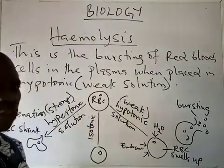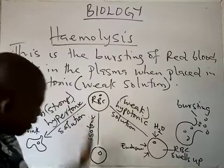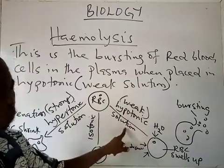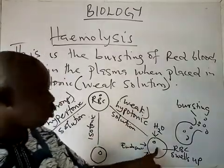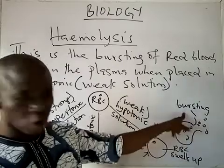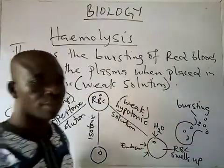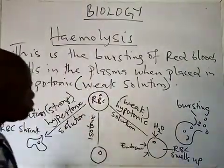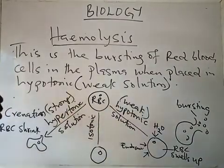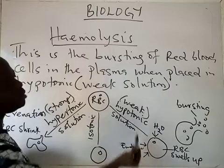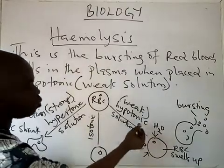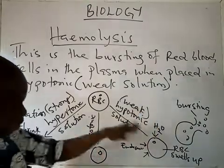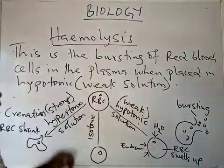When the red blood cells are surrounded by plasma with the same concentration of sodium chloride as the inside of the cell, it is said to be in an isotonic situation or equilibrium, so the cell will function very well. But when red blood cells are placed in weak solutions, they take in water by endosmosis, swell up, and burst to release their contents. This can be illustrated — if red blood cells are placed in distilled water, which is an example of a weak solution, hemolysis will take place.